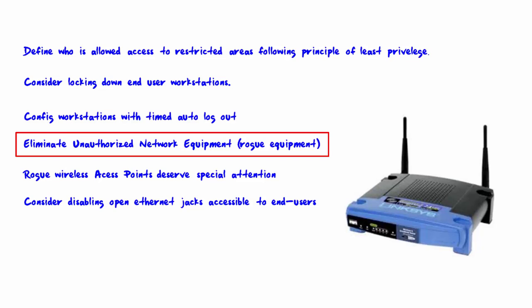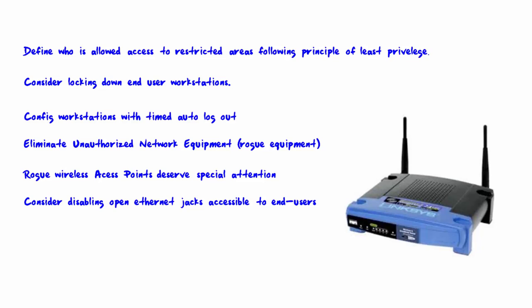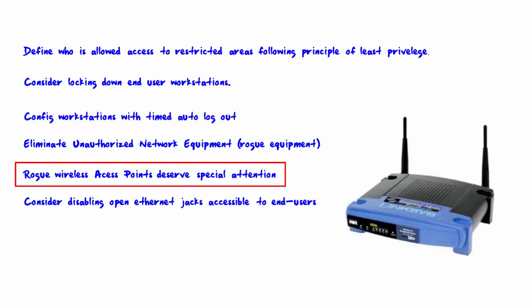Of course, there is also the possibility that rogue equipment may be installed on your network by black hats with the sole purpose of doing harm. Rogue wireless access points deserve special attention — this is a very common type of rogue equipment. The most direct way to find wireless access points is to use a program like inSSIDer to view all SSIDs in the area, specifically unauthorized SSIDs.